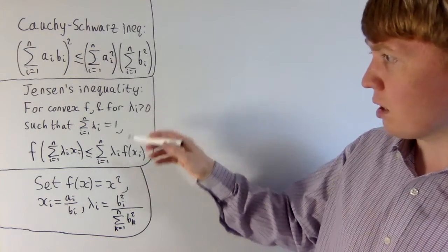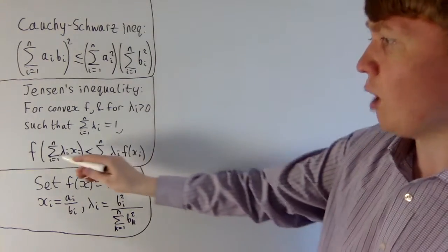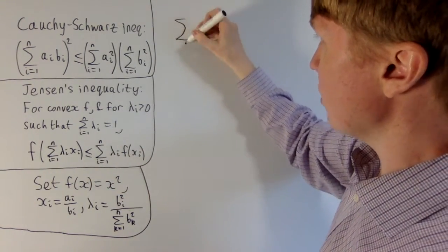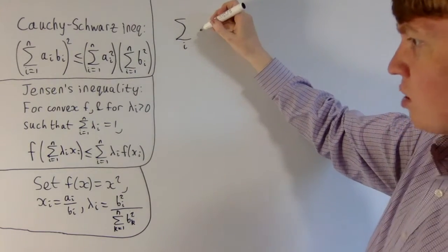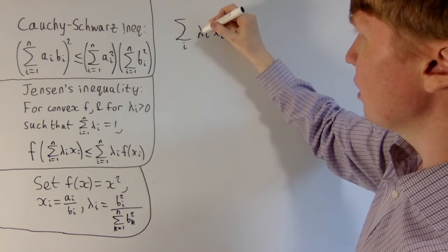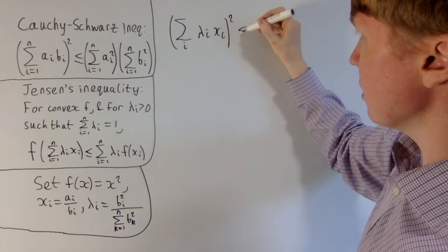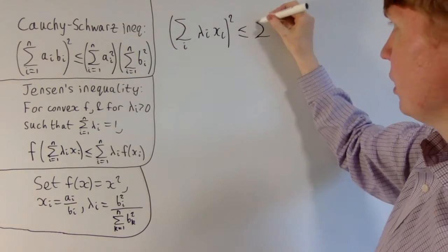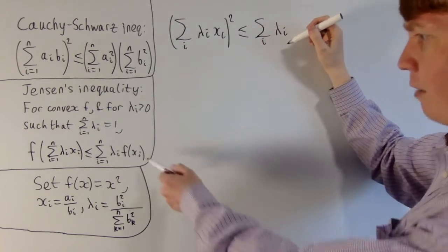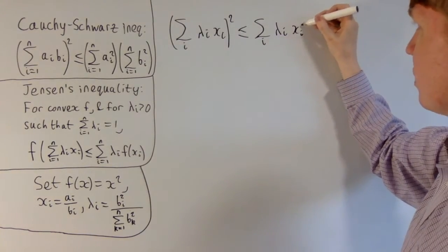Applying Jensen's inequality to f(x) = x²: f of the sum Σᵢ λᵢxᵢ gives us that sum squared, and by Jensen's inequality this is less than or equal to Σᵢ λᵢ f(xᵢ). Since f(xᵢ) = xᵢ², the right-hand side becomes Σᵢ λᵢ xᵢ².